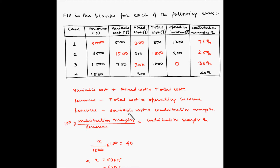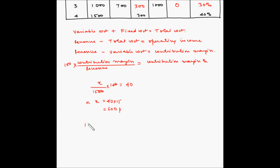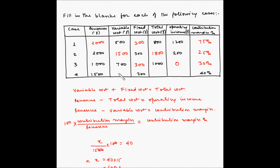Since contribution margin equals revenue minus variable cost, 1500 minus x equals 600, so variable cost equals 900. Variable cost plus fixed cost equals total cost: 900 plus 300 equals 1200. Operating income is revenue minus total cost: 1500 minus 1200 equals 300.